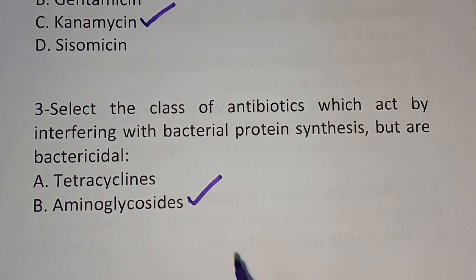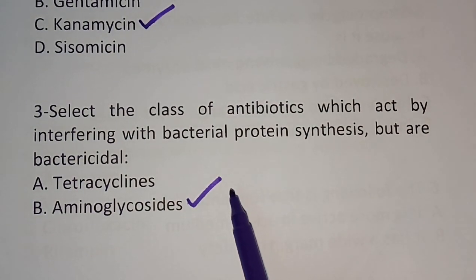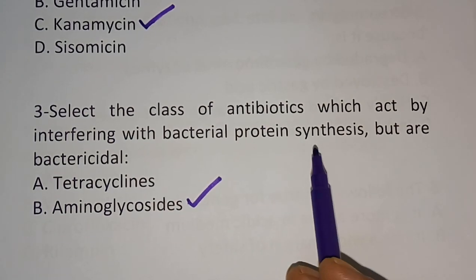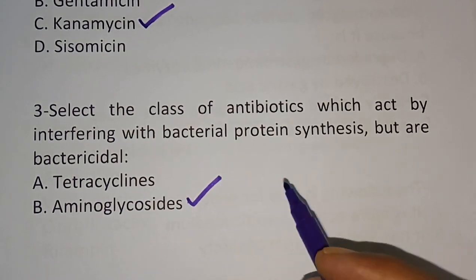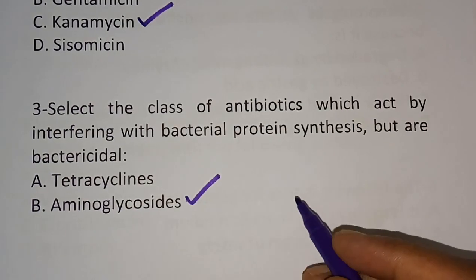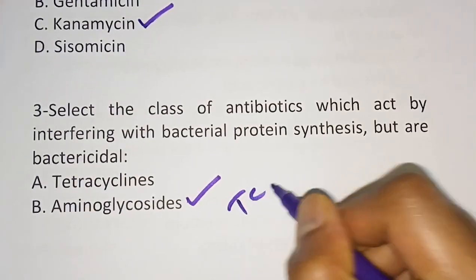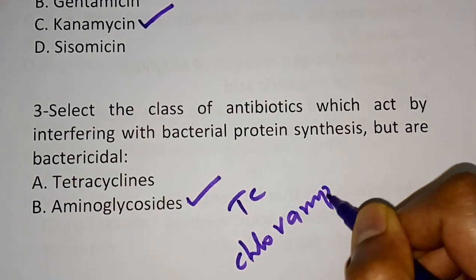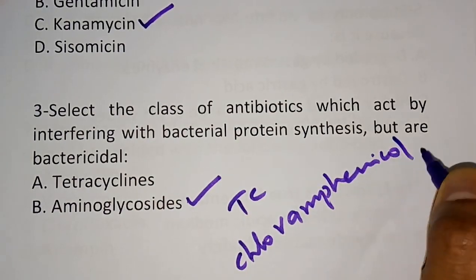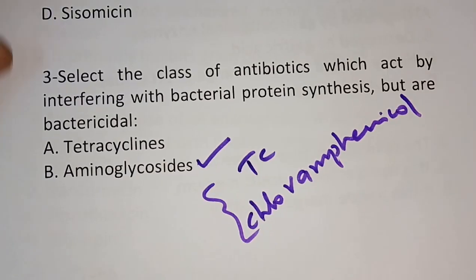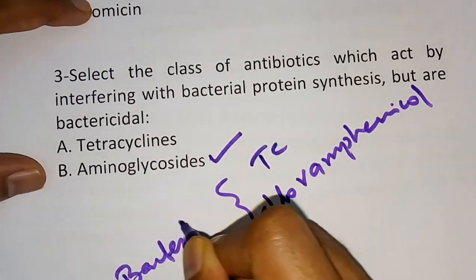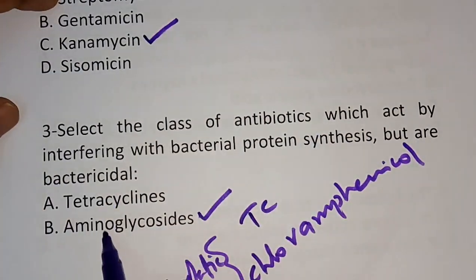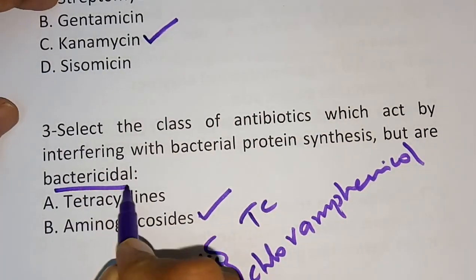We previously discussed that Tetracycline and Chloramphenicol also interfere with bacterial protein synthesis, but they are bacteriostatic — not bactericidal. Aminoglycosides, however, are bactericidal.